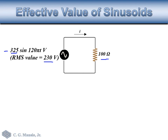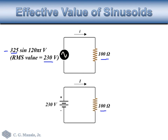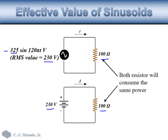Let's say we have a 100-ohm resistance connected to a sinusoidal source whose RMS value computes to 230 volts, and another circuit where the same 100-ohm resistor is connected to a DC source of 230 volts. Both will give the same power for the 100-ohm resistor. So the RMS value is like a DC equivalent — it will give the same heating effect as a DC voltage equal in value to the RMS of the sinusoid.